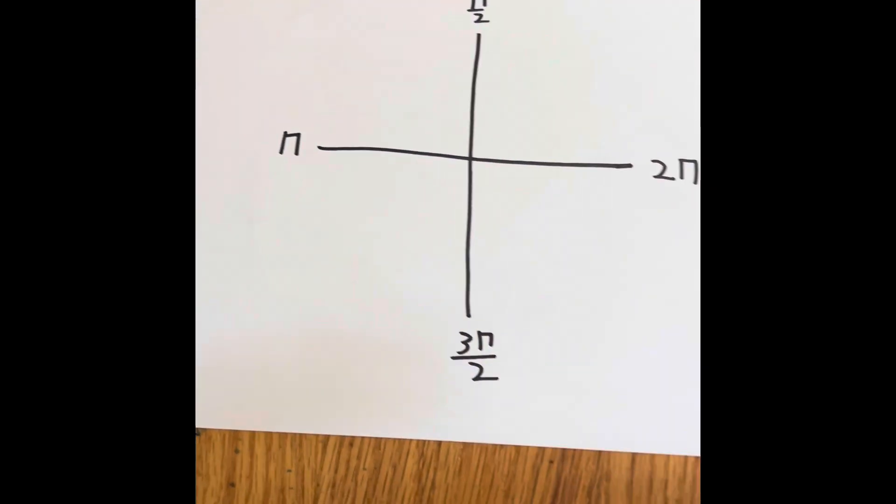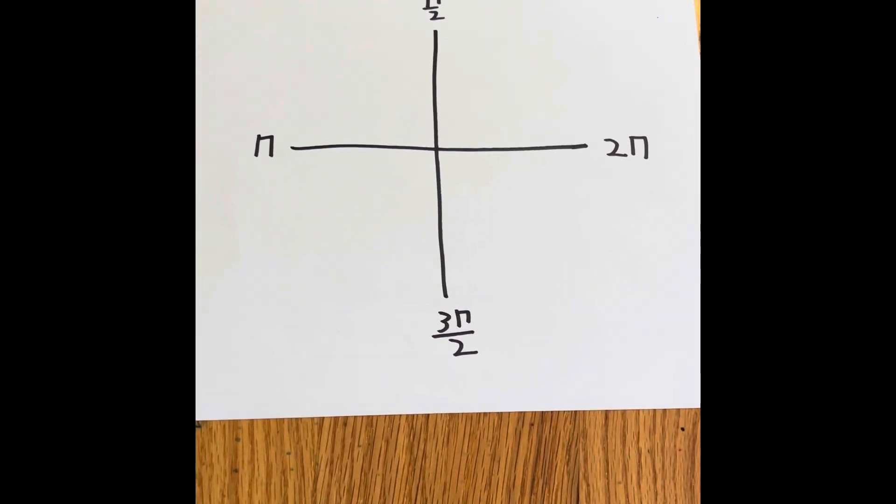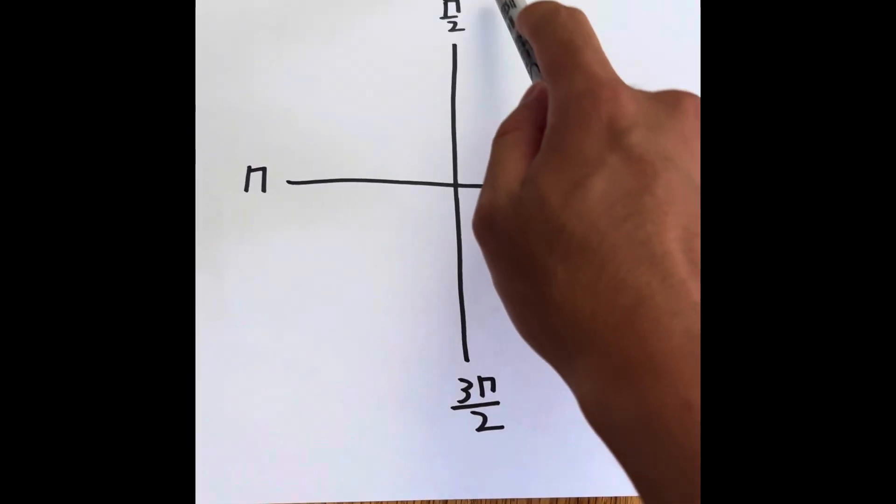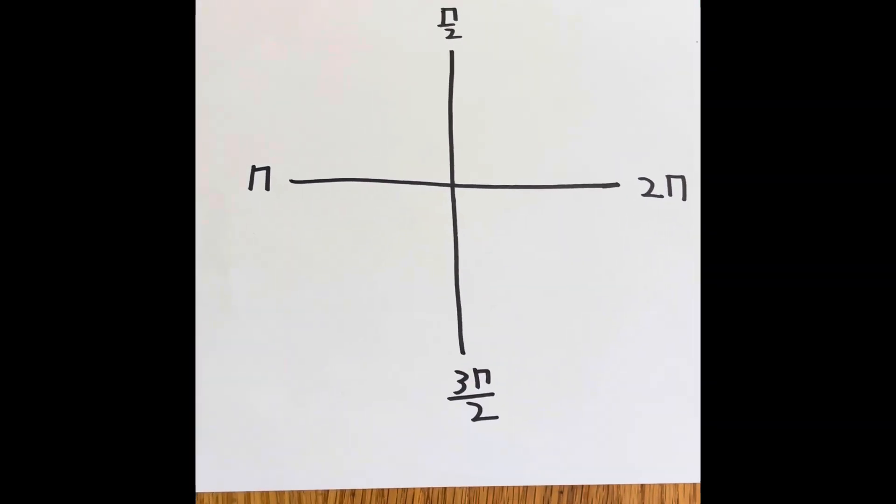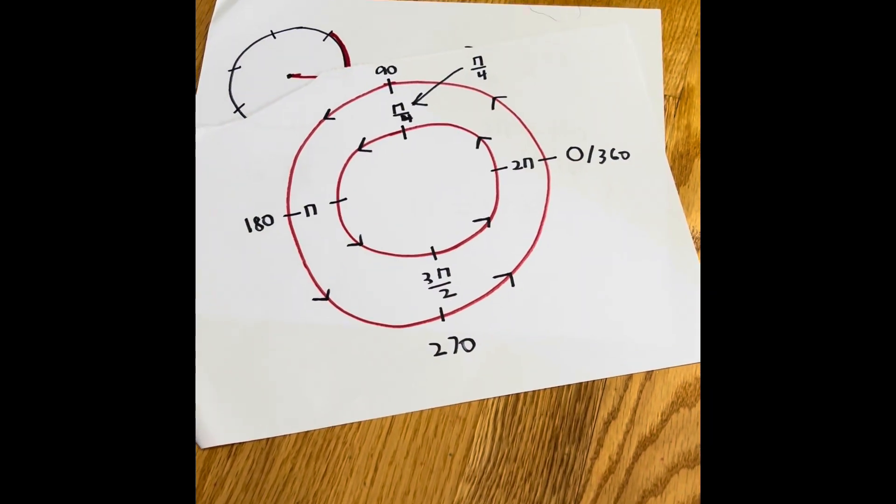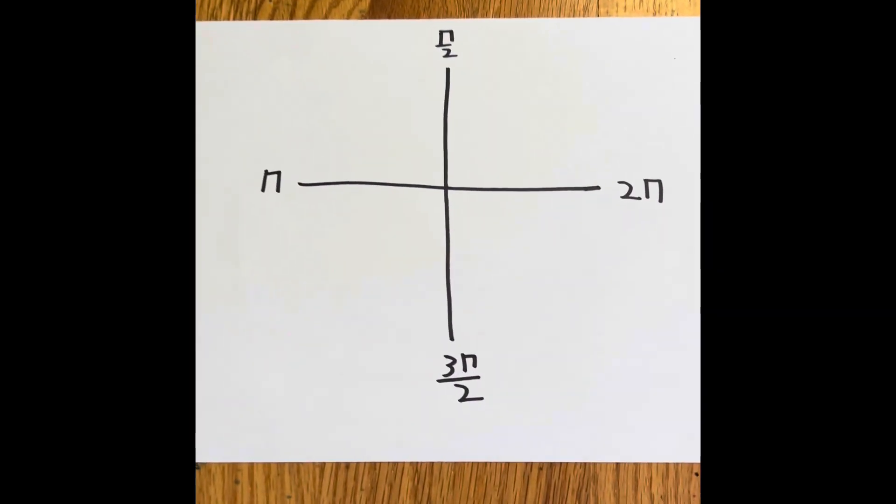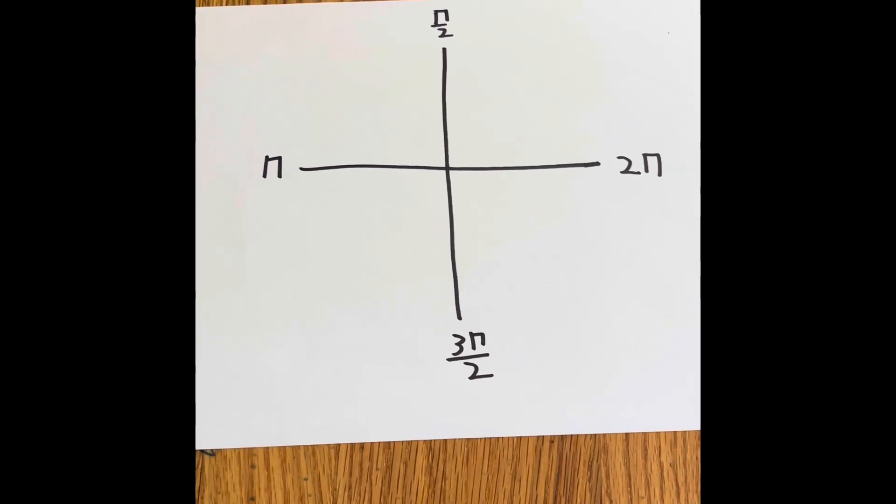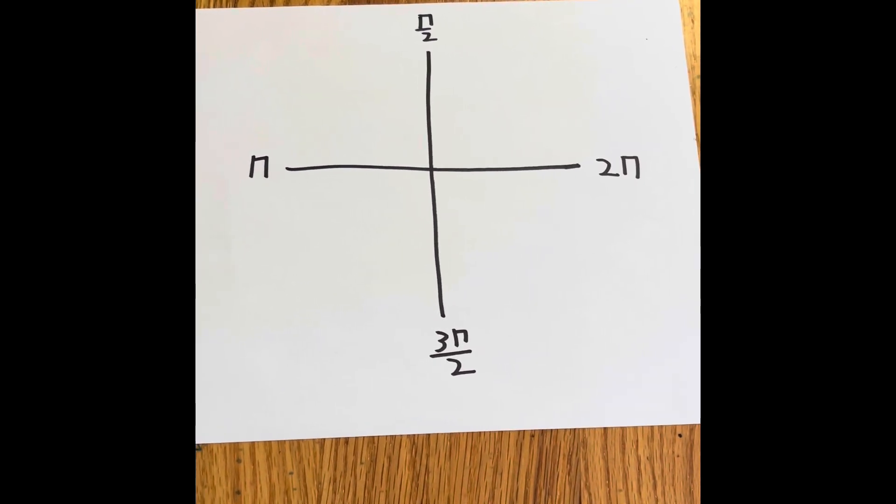Right over here is a coordinate plane. It has 2π, π divided by 2, π, and 3π divided by 2. And yeah, that does relate to the unit circle, but right now we're just focusing on just this part.